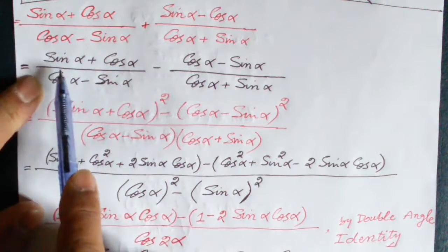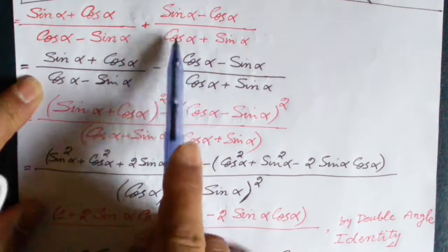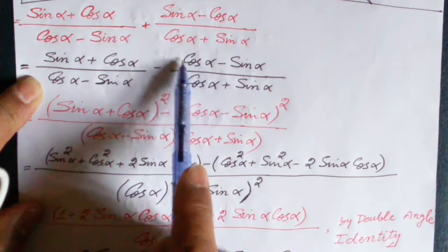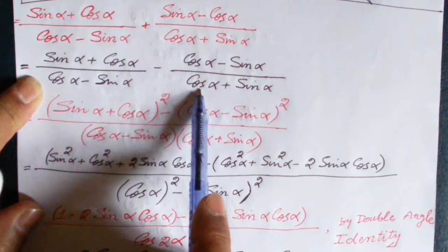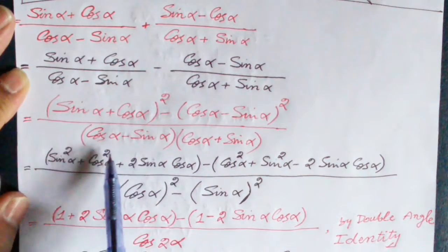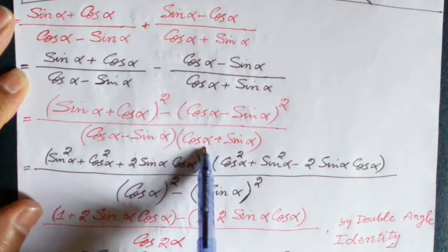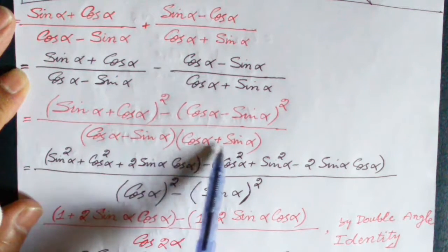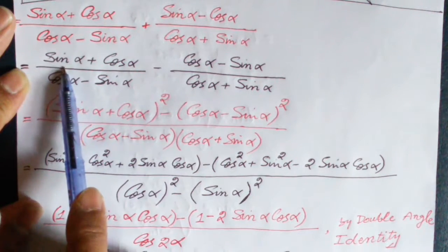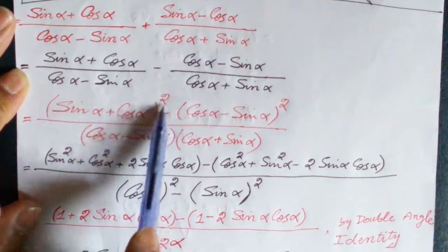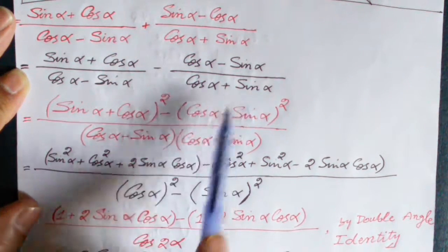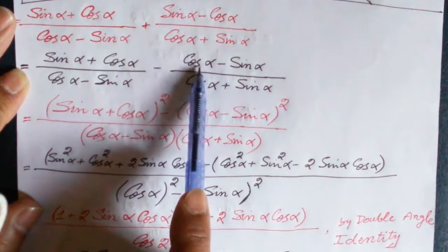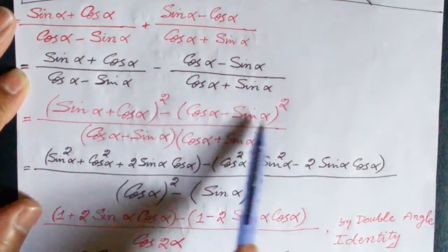Rearranging, we have (sin α + cos α)/(cos α − sin α). Taking minus common from the second term, we get minus(cos α − sin α) in the numerator, divided by (cos α + sin α). Taking the LCM as (cos α − sin α)(cos α + sin α), we multiply each fraction accordingly: (sin α + cos α)² minus (cos α − sin α)² in the numerator.